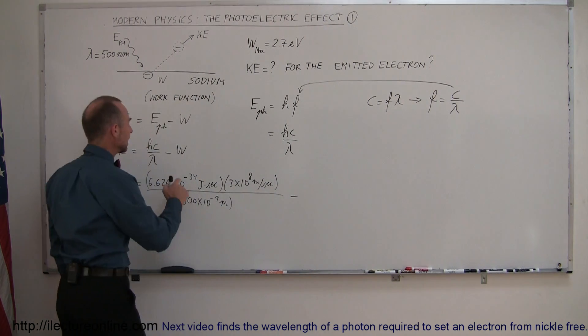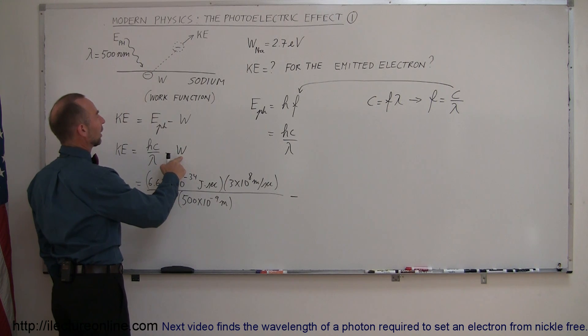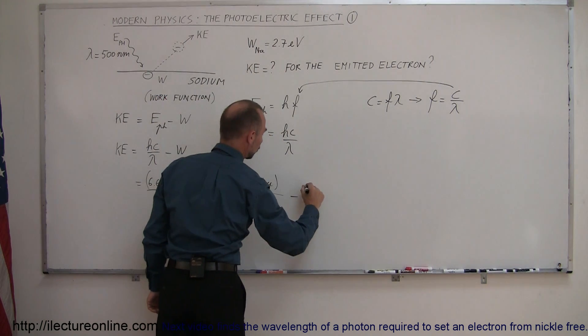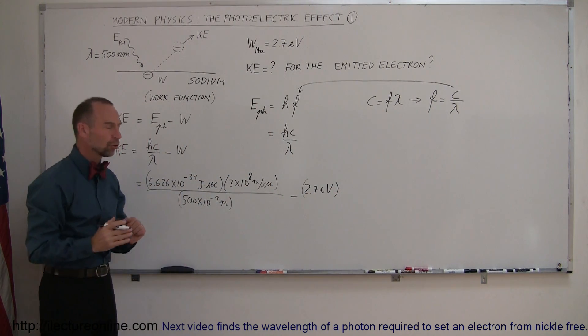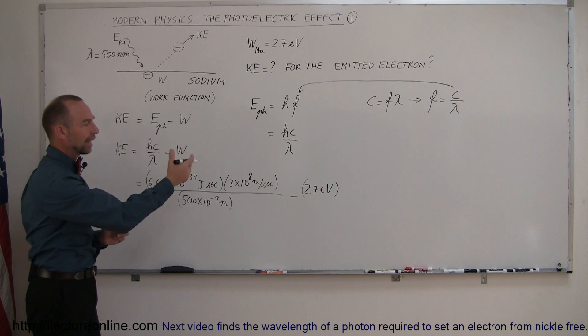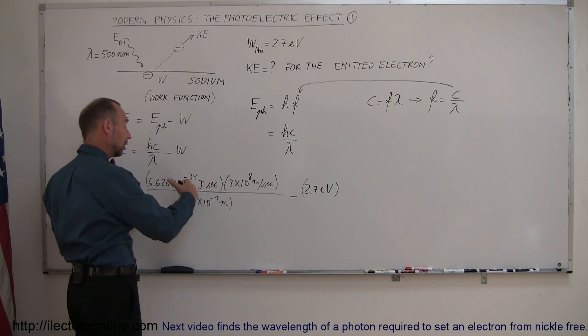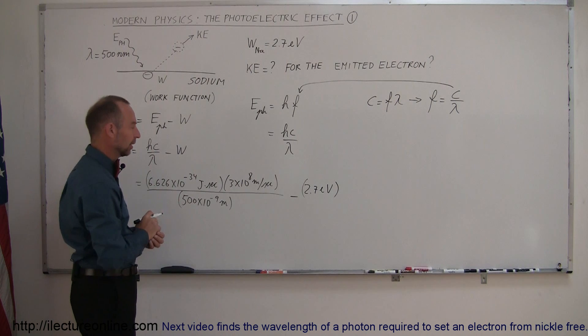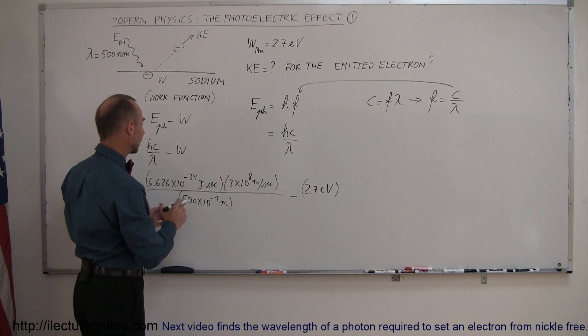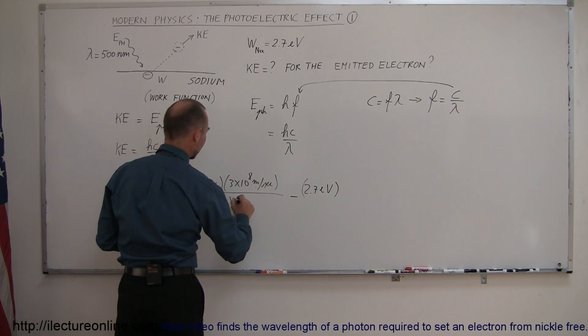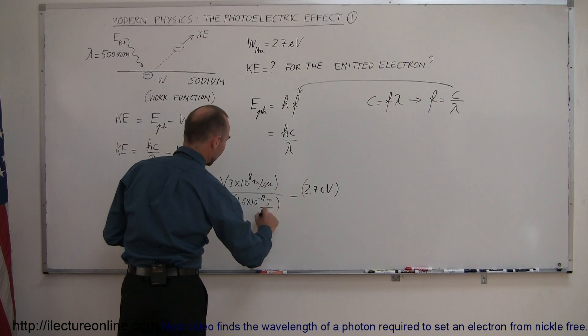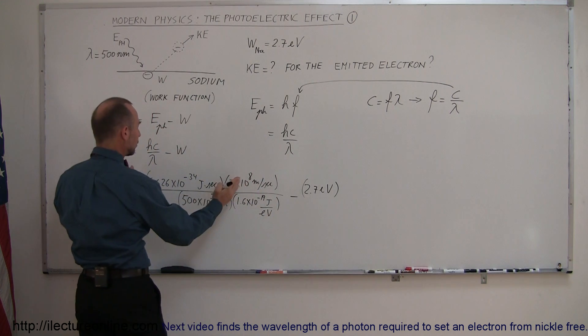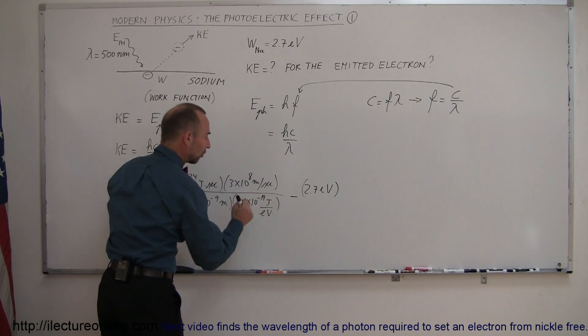We subtract from that the energy of the work function. Now the work function is given to us in electron volts, so that's 2.7 electron volts. And since this is going to be expressed in terms of joules, we probably want to express that term in joules as well. Or we can convert this to electron volts and then we have a way to look at it. So let's do that. Let's convert this to electron volts. So we're going to divide this by 1.6 times 10 to the minus 19 joules per electron volt. And this will then convert the units of joules into units of electron volts.